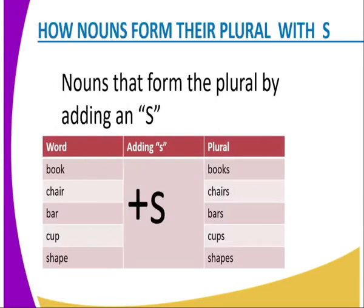We'll start by defining what a noun is. A noun is a naming word that describes a place, a thing, or a person, and we have different types of nouns.